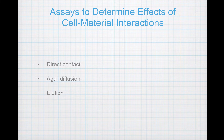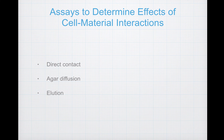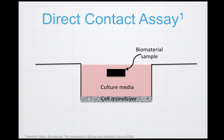A number of different cytotoxicity assays have been developed, including direct contact tests, agar diffusion, and elution tests. As a basic rule, anything present in a biomaterial — on the surface or inside of it — that interferes with cell metabolism or protein synthesis will be cytotoxic. This can be the material itself, any additives, or any potential degradation products. These cytotoxicity assays are aimed at determining that. The simplest is the direct contact assay, which is the one we will be doing.